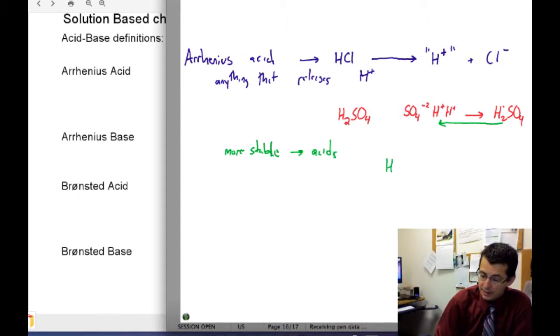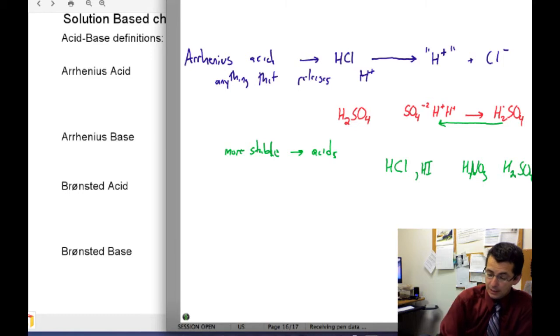We've already seen things like HCl and HI. These are pretty good acids, but also HNO3 and H2SO4 would be considered acids. Now, if there's an Arrhenius acid, there are Arrhenius bases.